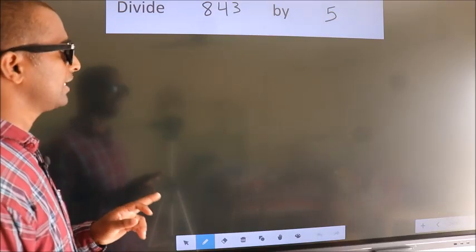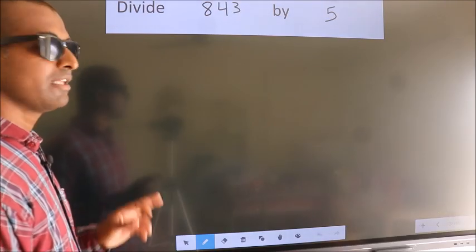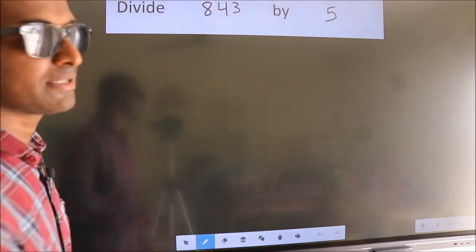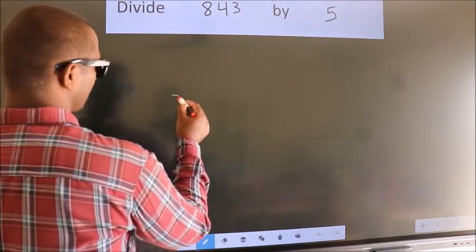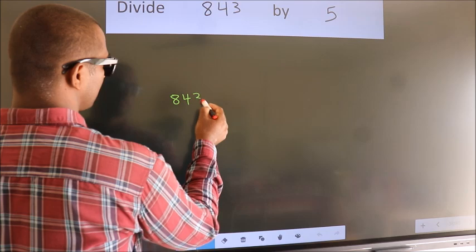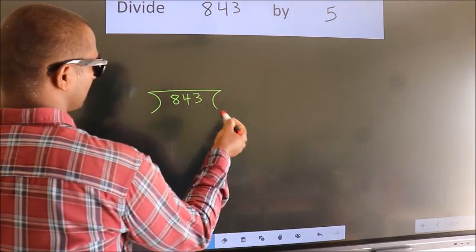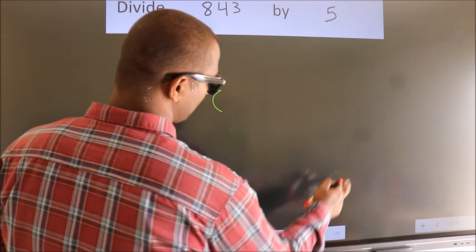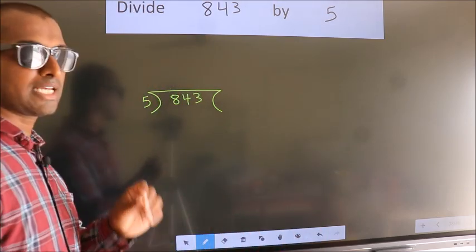Divide 843 by 5. To do this division, we should frame it in this way. 843 here, 5 here. This is your step 1.